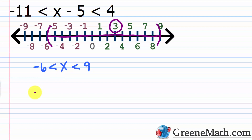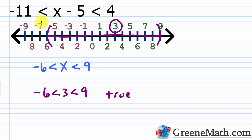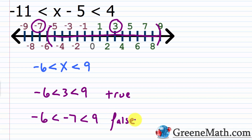Let's grab the number 3 as an example. We check: negative 6 is less than 3, which is less than 9. Is 3 greater than negative 6? Yes. Is 3 less than 9? Yes. Both parts are true. If I grab something outside the shaded area, like negative 7, we check: is negative 7 greater than negative 6? No — that's false. Even though negative 7 is less than 9, the whole thing must be true. X must be larger than negative 6 and less than 9. Negative 6 and 9 are the boundaries — not included — and everything in between works.